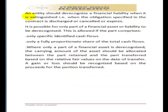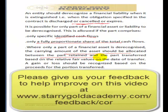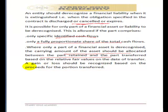Derecognition is the removal of a previously recognized instrument from the statement of financial position. A financial asset should be derecognized when the contractual rights to cash flows from the asset expire, or when the entity transfers substantially all the risks and rewards of ownership to another party. A financial liability should be derecognized when it is extinguished — that is, when the obligation specified in the contract is discharged, cancelled, or expires. It is also possible for only part of a financial asset or liability to be derecognized, provided that part comprises specific identified cash flows or a proportionate share of total cash flows.